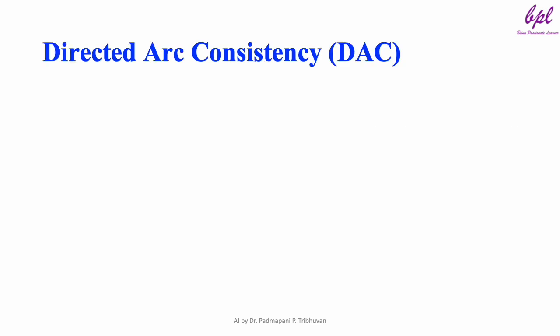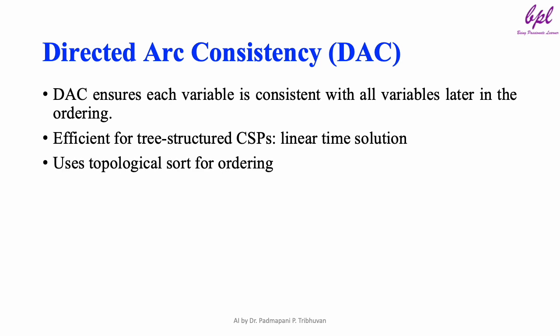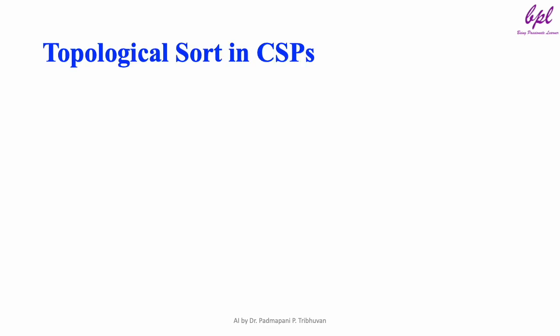Directed arc consistency is a property where each variable in the problem is consistent with all variables that follow it in a certain order. This works particularly well in tree-structured CSPs, allowing us to solve these problems in linear time. To achieve this, we use topological sort to order the variables in the right sequence.